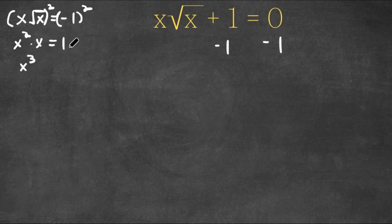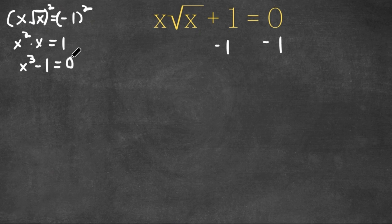Now x squared times x is x to the power of three. And now I'm going to go ahead and move this one back. So now we have x to the power of three minus one is equal to zero. I moved that one just so it could be more simple to square both sides.